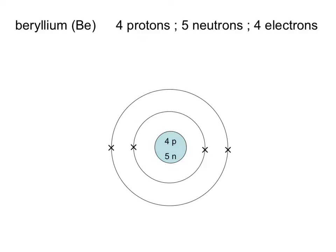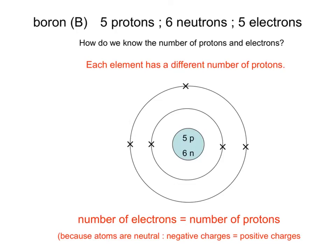Continuing with the drawings, beryllium, which is our fourth smallest element, or BE, has got four protons, five neutrons, and four electrons. Again, the protons and neutrons go into the central nucleus. It's got four electrons. Two go in the first shell, and two go in the second shell. Here's boron with five protons, six neutrons, and five electrons. The five protons and six neutrons go in the nucleus, and the five electrons go two in the first shell, and three in the second.